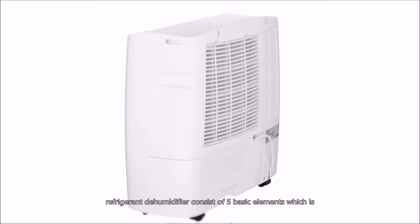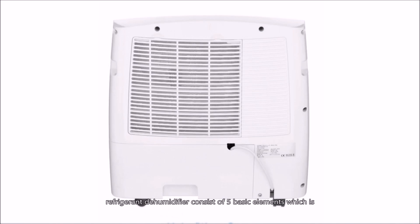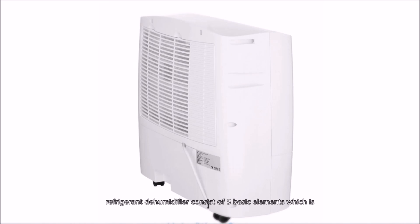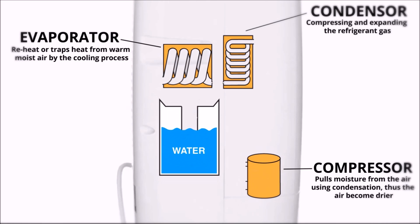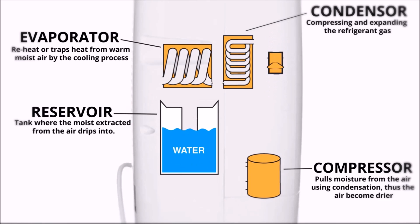A refrigerant dehumidifier consists of five basic elements: evaporator, condenser, compressor, reservoir, and fan.